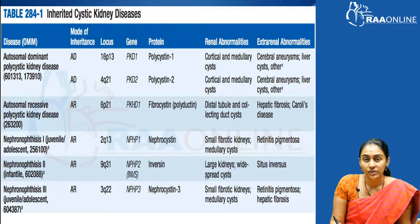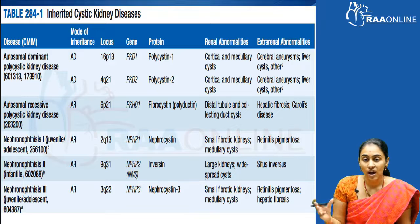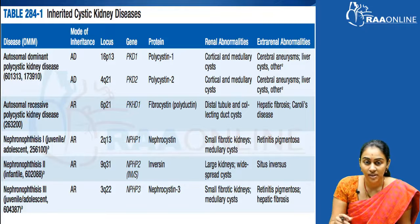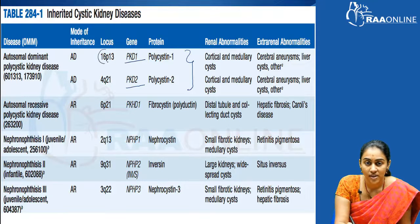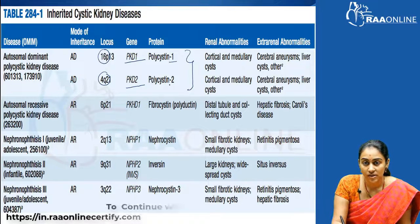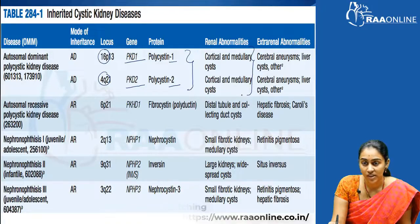The differential diagnosis of a patient with multiple renal cysts includes autosomal dominant polycystic kidney disease, where the mutation is in the PKD1 or PKD2 gene, located on chromosomes 16 and 4 respectively, coding for polycystin-1 and polycystin-2. Patients with polycystic kidney disease have large kidneys with both cortical and medullary cysts.